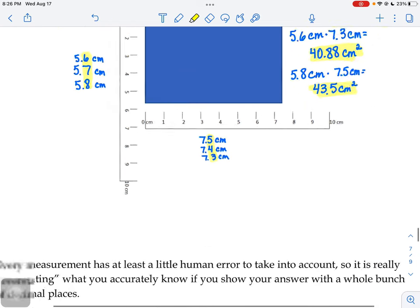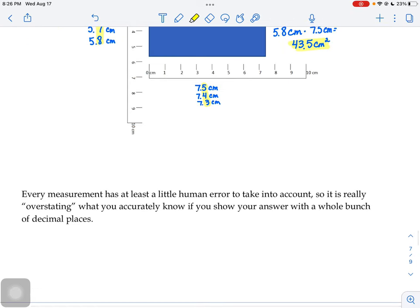So it says down here below, because every measurement you make has at least a little human error, we have to take into account. So it's overstating what we accurately know if you show your answer with a whole bunch of decimal places.